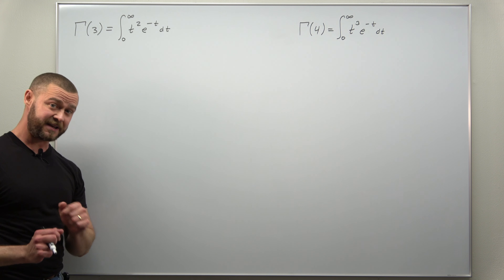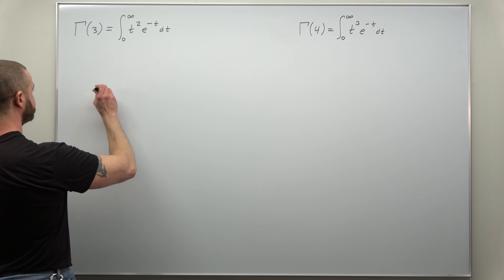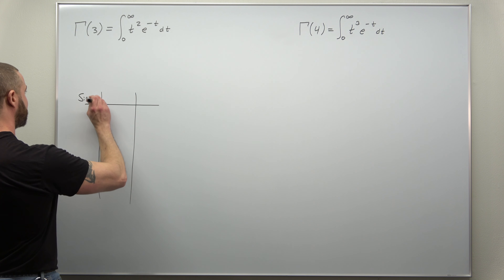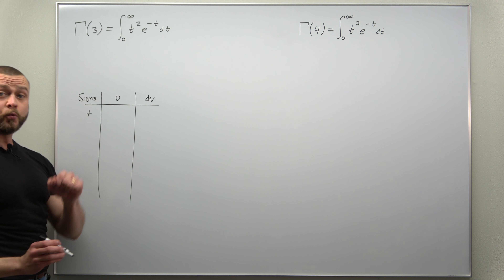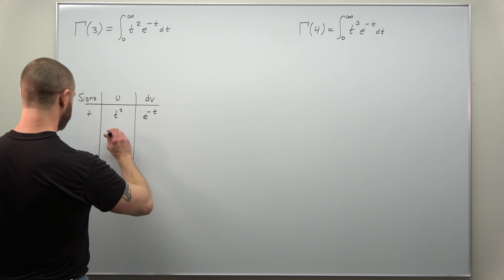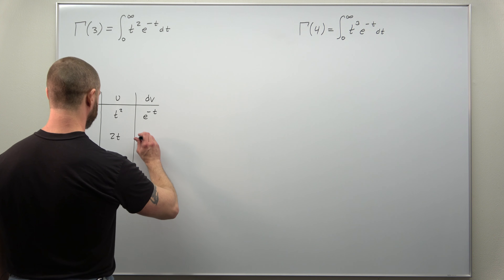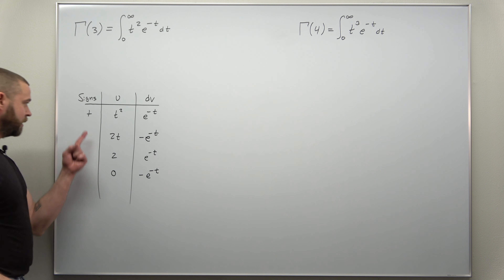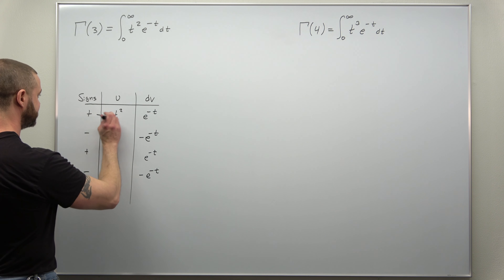First up, gamma of 3: the improper integral of t squared times e to the negative t. We'll set up the tabular method with a column for signs, a column for u, and a column for dv. Start with a plus. Choose u as t squared and dv as e to the negative t. Repeatedly differentiate: 2t, 2, then zero. Repeatedly integrate the dv column: negative e to the negative t, positive e to the negative t, negative e to the negative t. Alternate your signs: plus, negative, plus, negative. Then take the product of the signed diagonals.